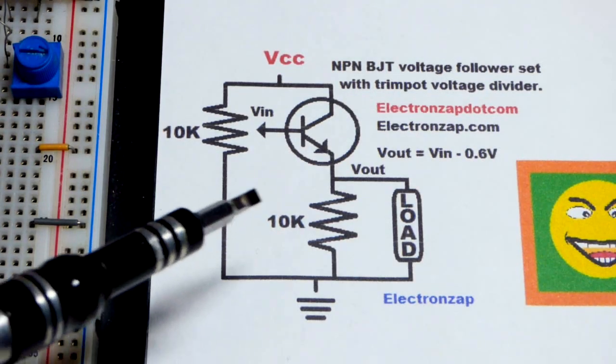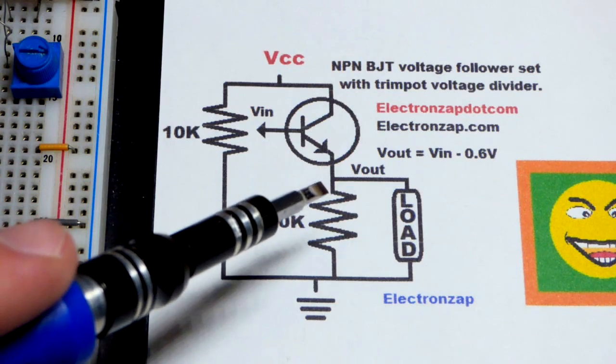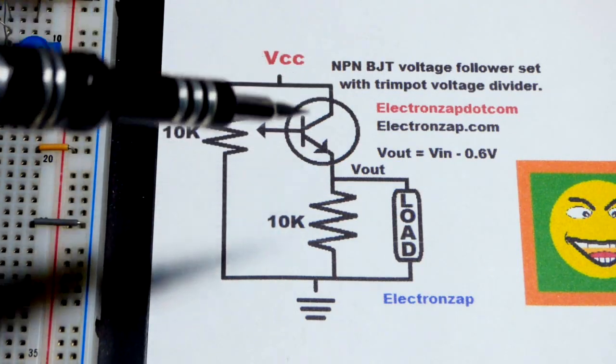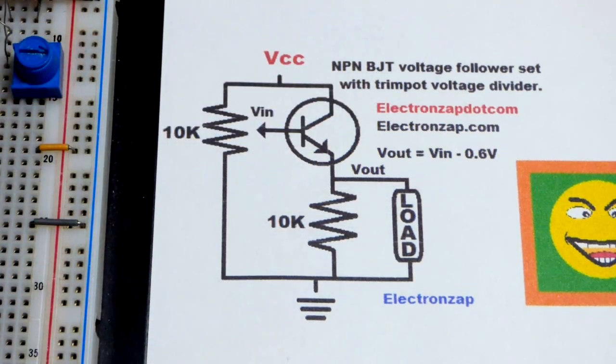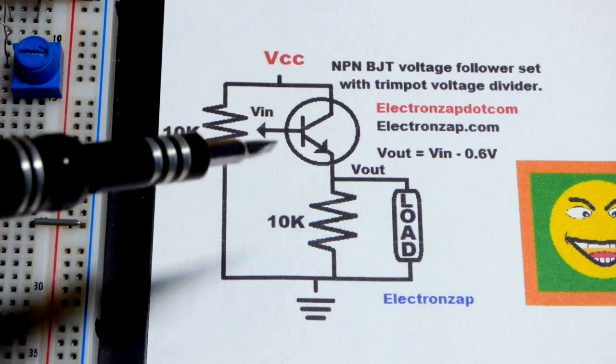So now in this video, we're going to look at the NPN bipolar junction transistor wired as an emitter follower, also commonly called a common collector. I wrote voltage follower here, that's really more accurate for op amps, but I think it's still okay to say voltage follower.